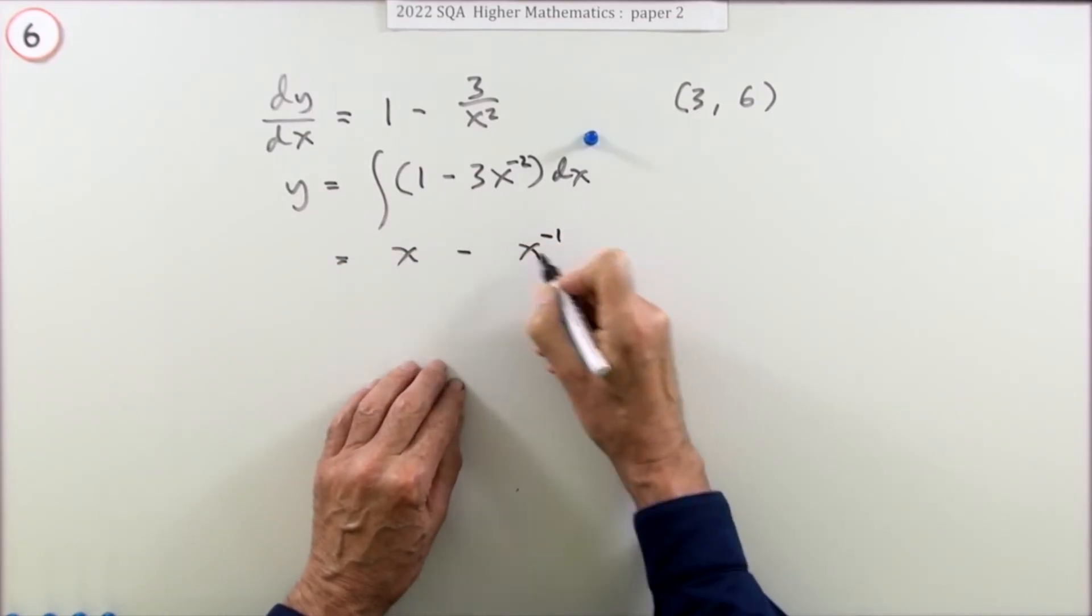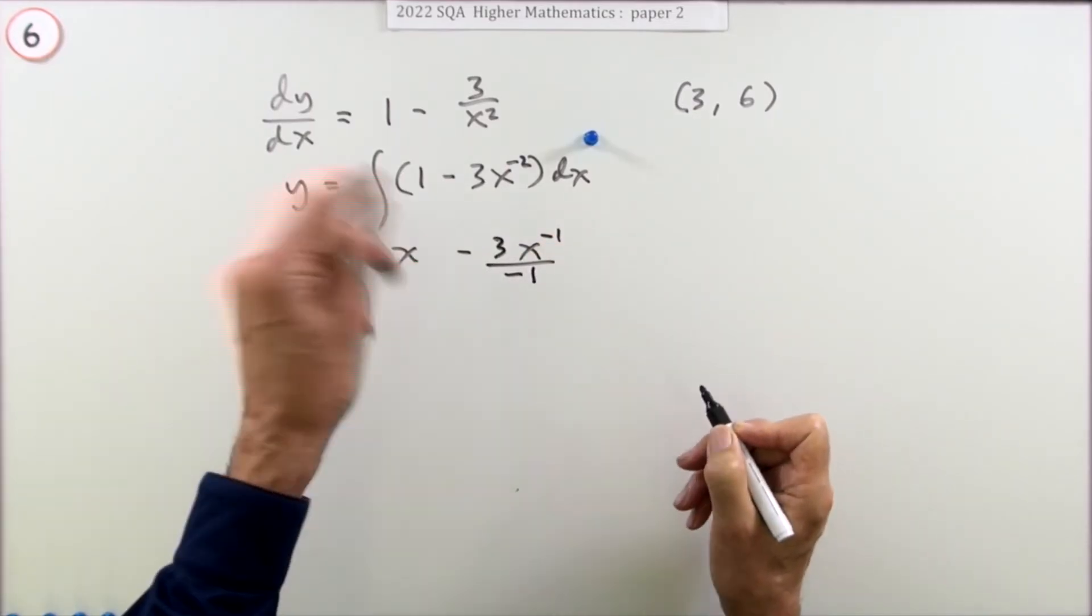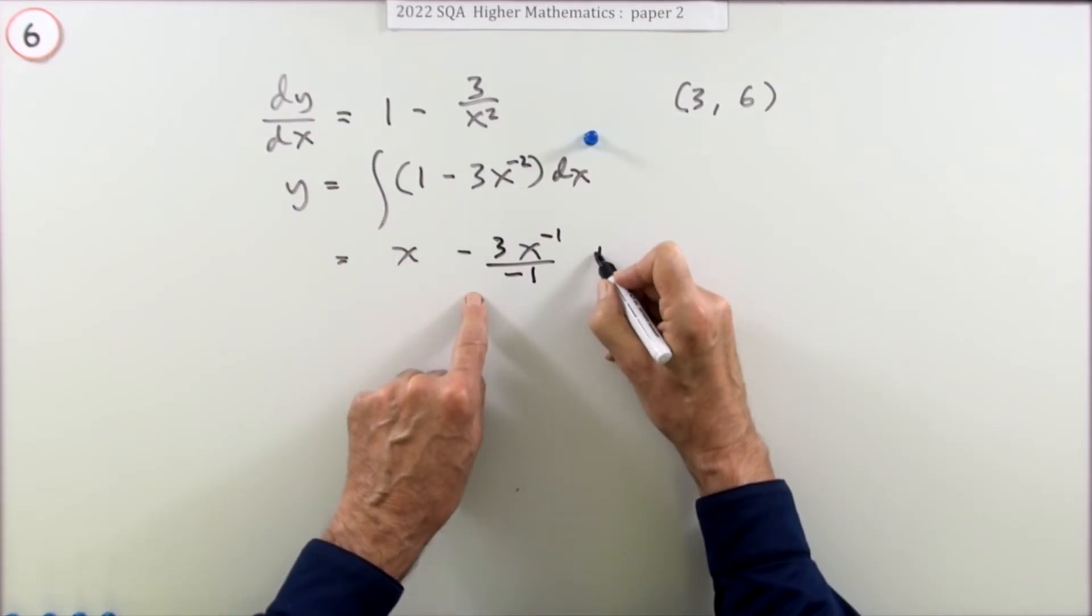But then maybe I'll put it down as, because you've probably done this. Although I wouldn't. I would just go in with plus 3. But plus c.